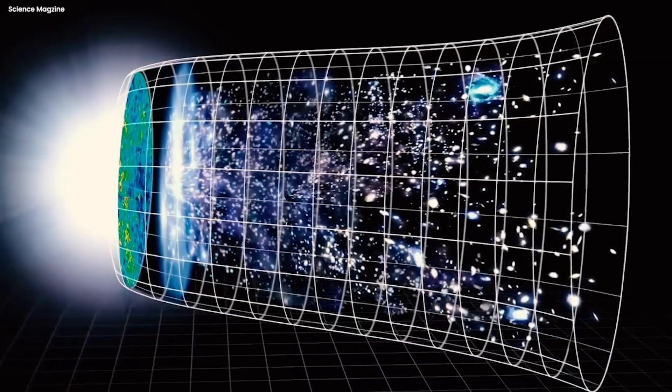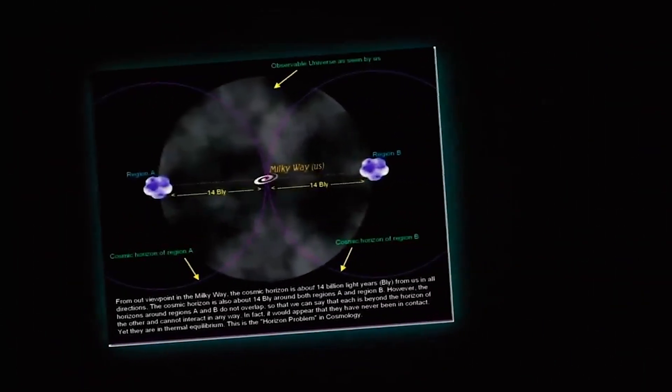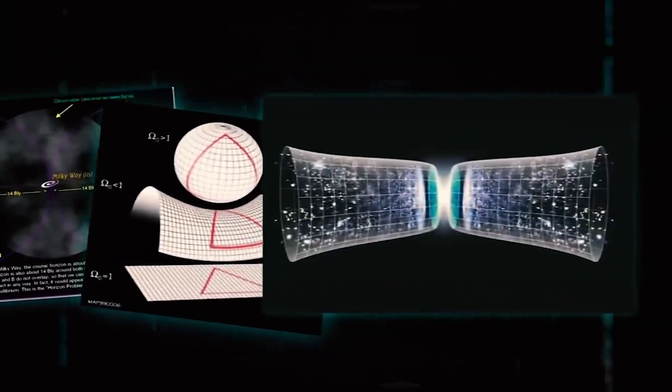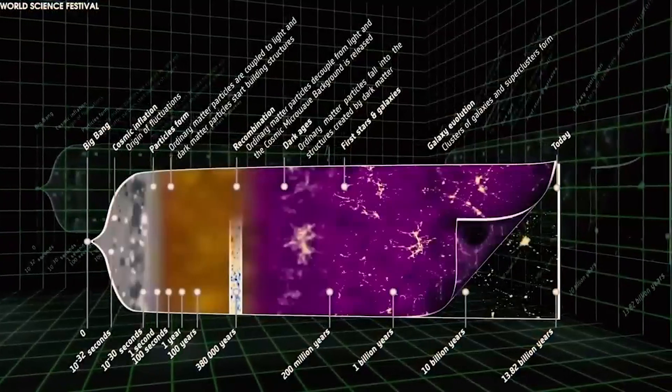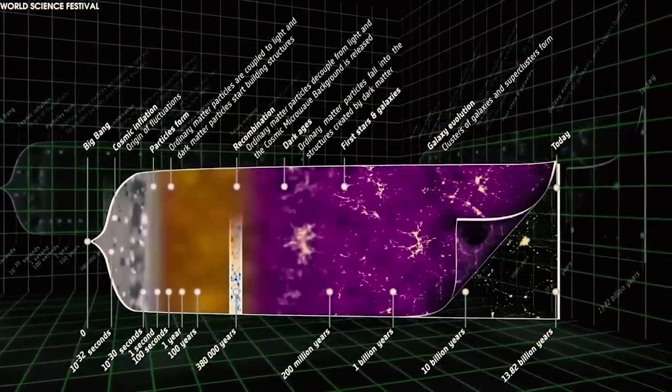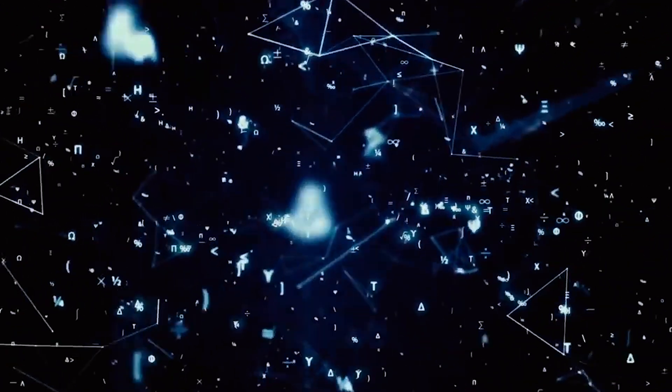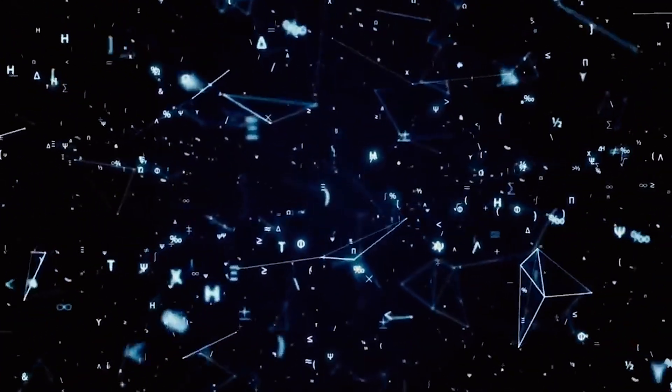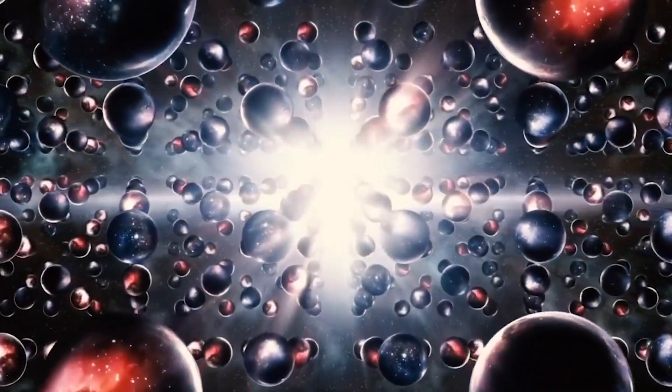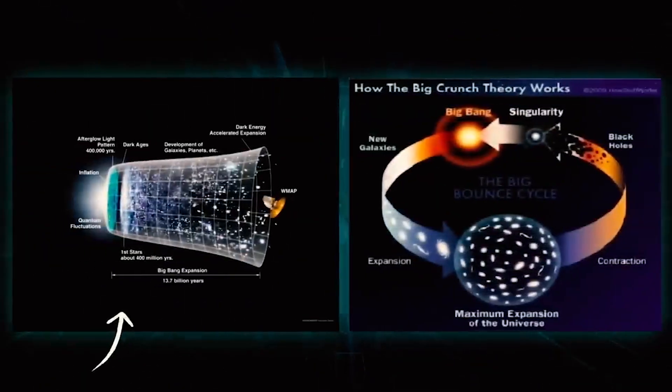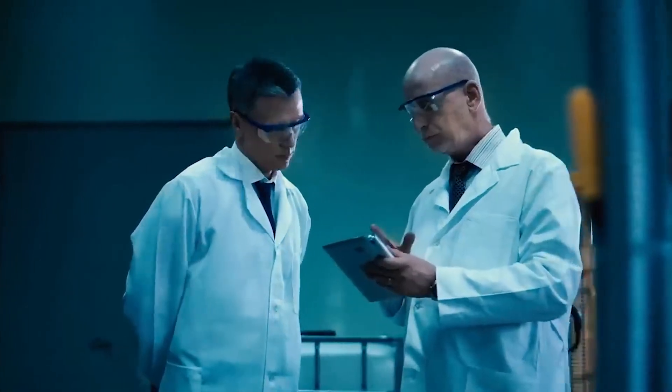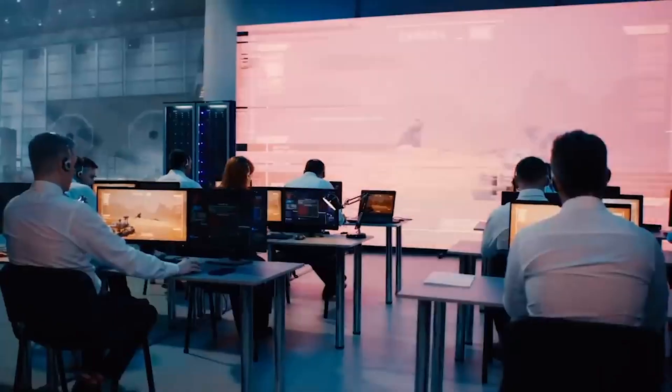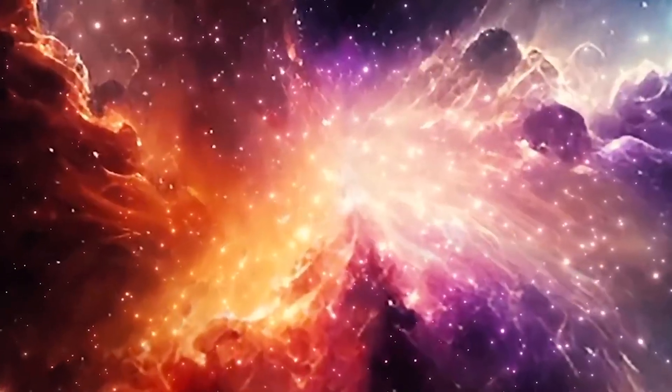However, the Big Bang Theory is not perfect. It has some unresolved problems, such as the horizon problem, the flatness problem, and the singularity problem. These problems suggest that there might be something missing, or wrong, in our current model of the universe. Some scientists have proposed alternative or complementary theories, such as the multiverse theory, the inflationary theory, and the cyclic theory, to explain these problems. But none of these theories have been conclusively proven or disproven by observations, that is, until now.